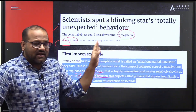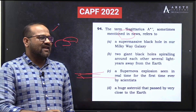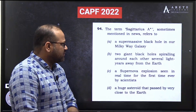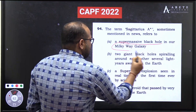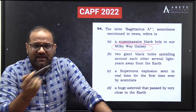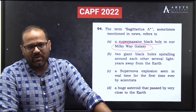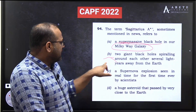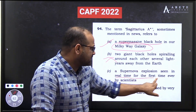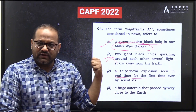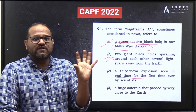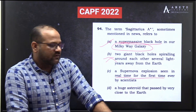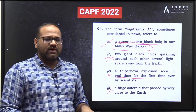These were all in the news but none of them were named Sagittarius A*. Revisiting the question: the term Sagittarius A*, sometimes mentioned in news, refers to a supermassive black hole in our Milky Way galaxy. Many black hole discoveries happen, but when something is related to our own Milky Way, it becomes even more important. The two spiraling black holes and supernova magnetar were other valid news items but not the correct answer.